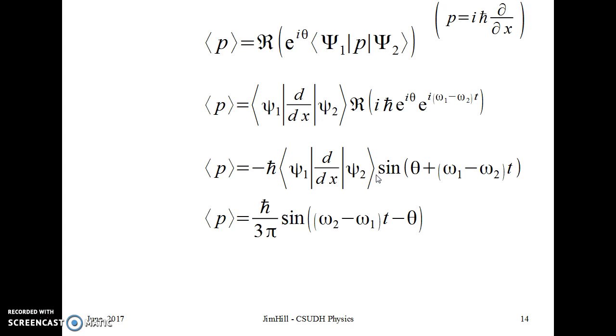But you can look at the limiting cases and say, what do I know? Well, if there were no phase between these two, I would start with 0 momentum, because I'd start in a mixture of pure states, which actually works here. It's the way that math shakes out. It makes sense that the frequency, omega 2 minus omega 1, is the same as it was for position. It better be. It makes sense that this complex phase is going to give me a different starting value, because after all, that's what phase is all about.